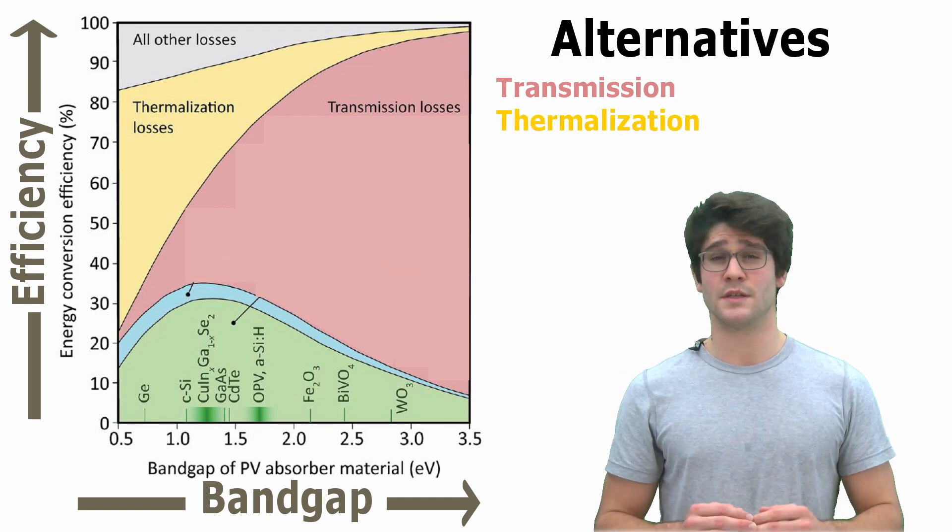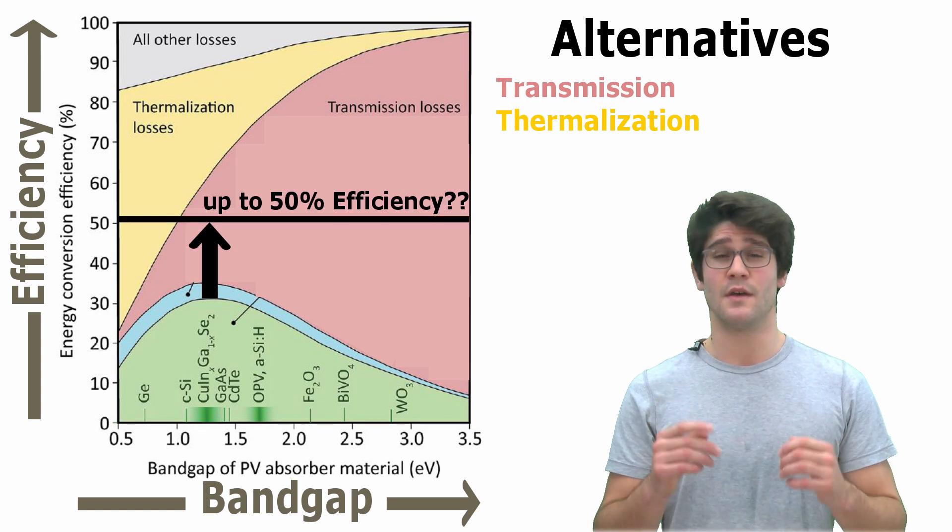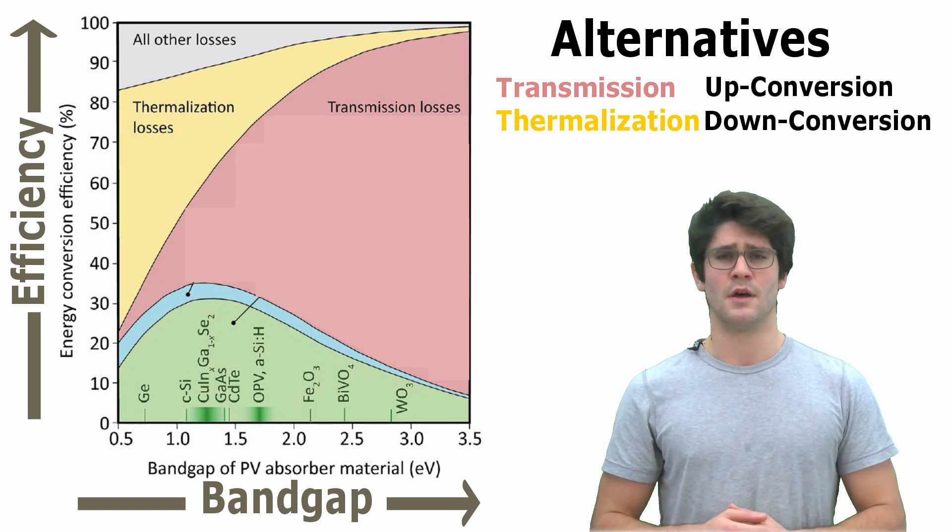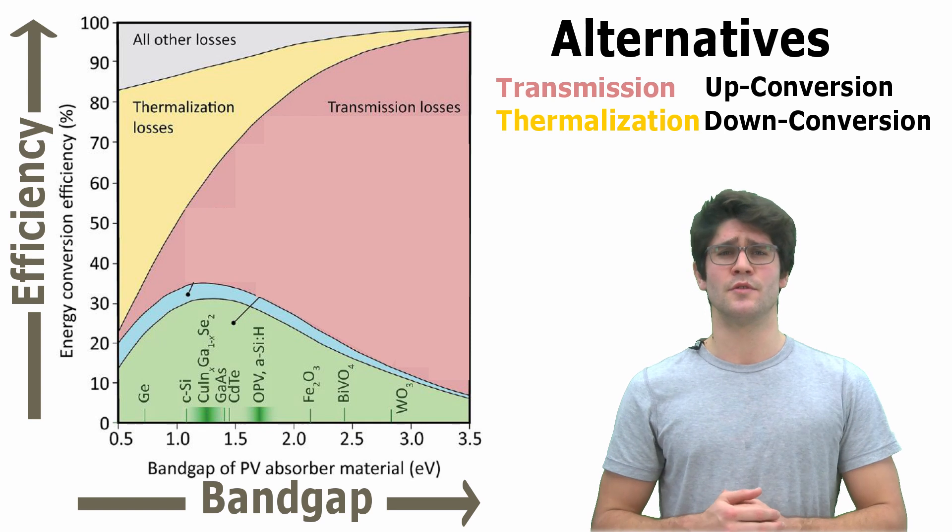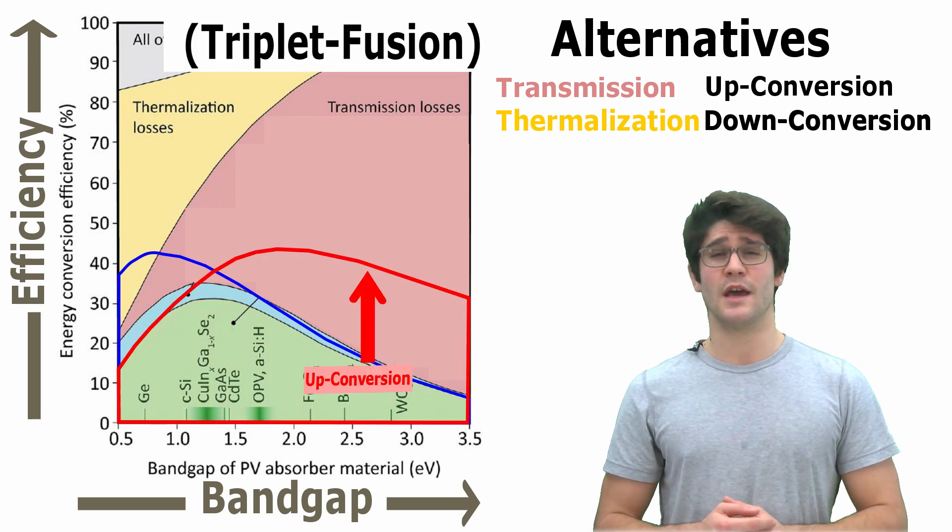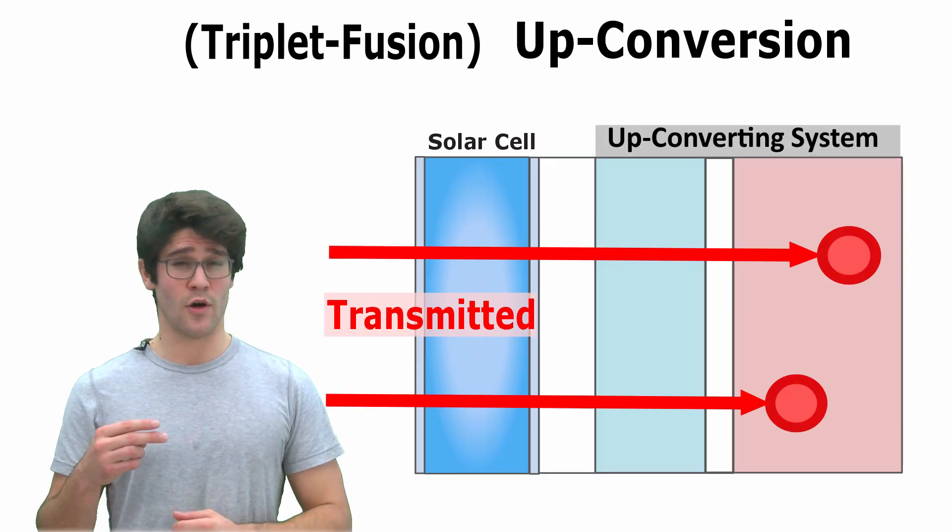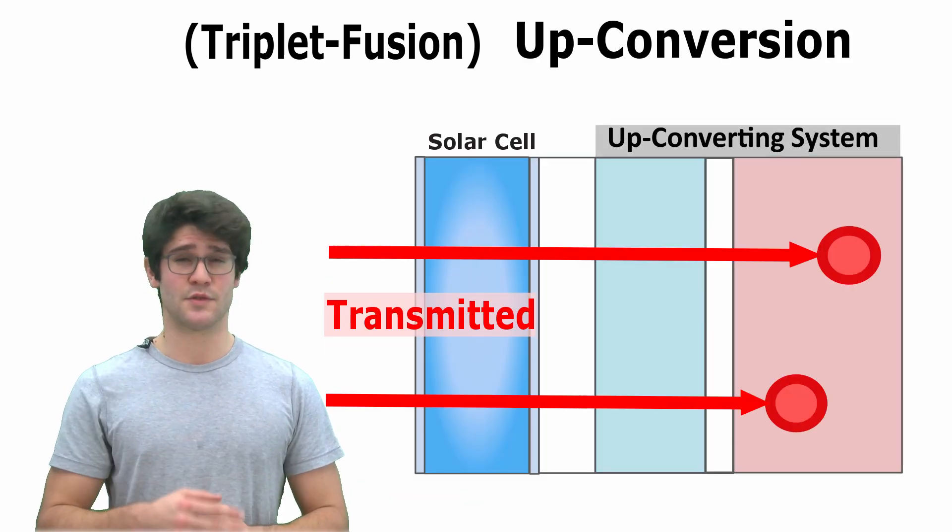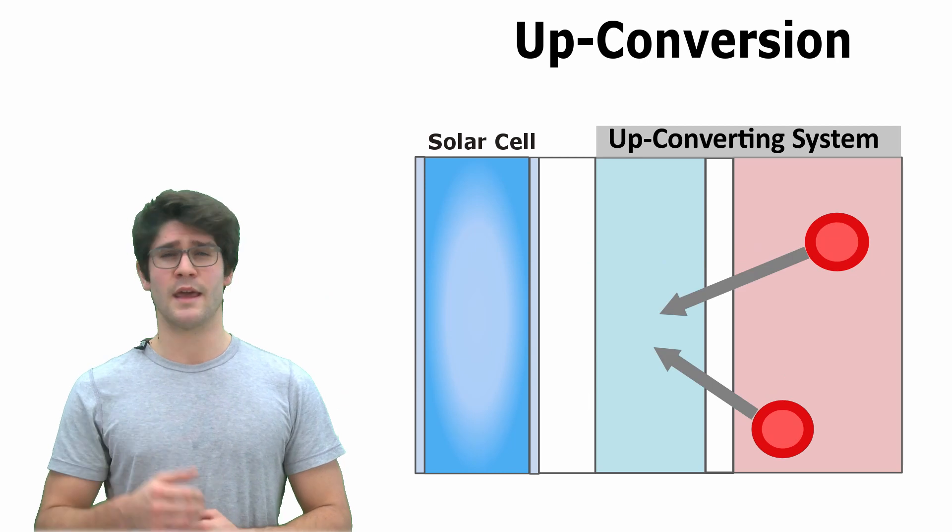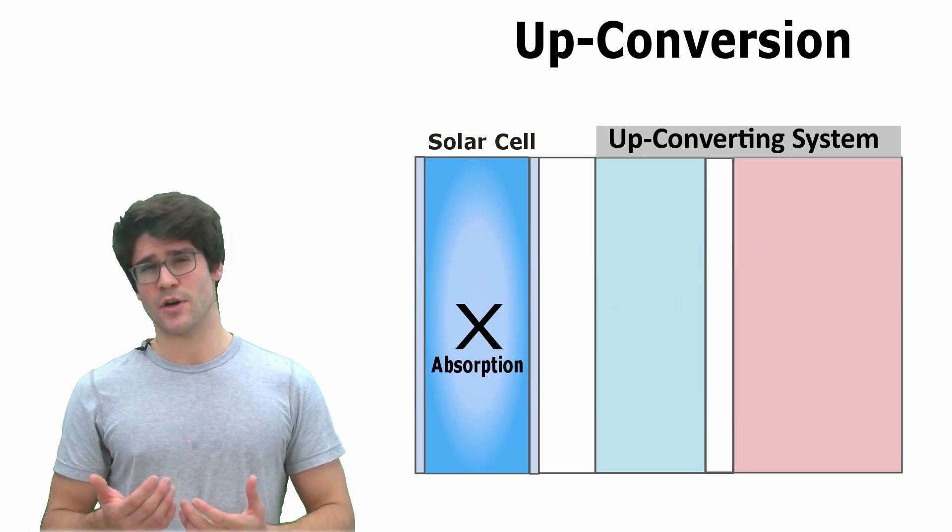Proposed solutions to reach efficiencies up to 50% are down and upconversion. While downconversion aims to reduce thermalization losses, upconversion aims to reduce transmission losses, transforming two low energy photons, transmitted through the cell, into one high energy photon, which is absorbed back in the cell.